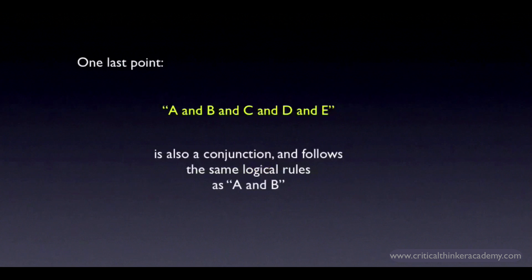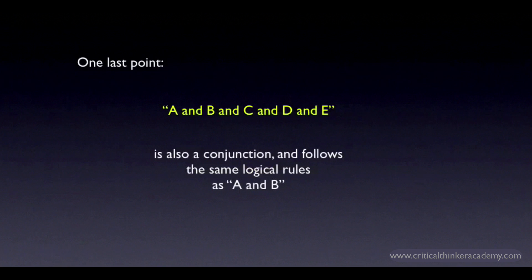One last point: conjunctions can have more than two component claims. A claim like this one might represent a compound claim such as: John is a writer and a director and a producer of the Simpsons TV show, but he's also a stand-up comic and an accomplished violinist. This is still a conjunction, and it follows the same rules as any conjunction — namely, it's true as a whole just in case all those component claims are true, and it's false otherwise. This is about all you need to know about the logic of conjunctions and how conjunctions are expressed in ordinary language.